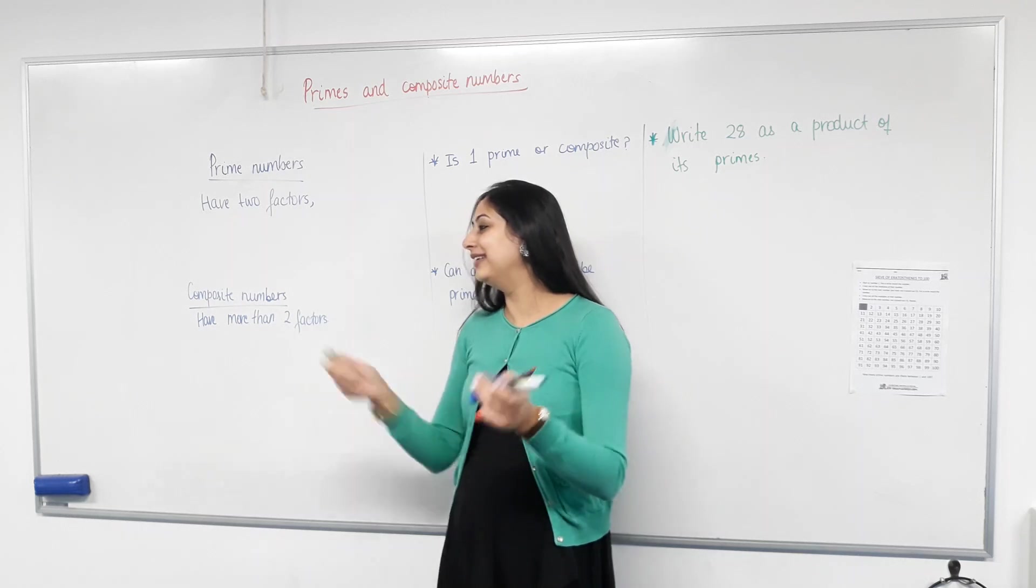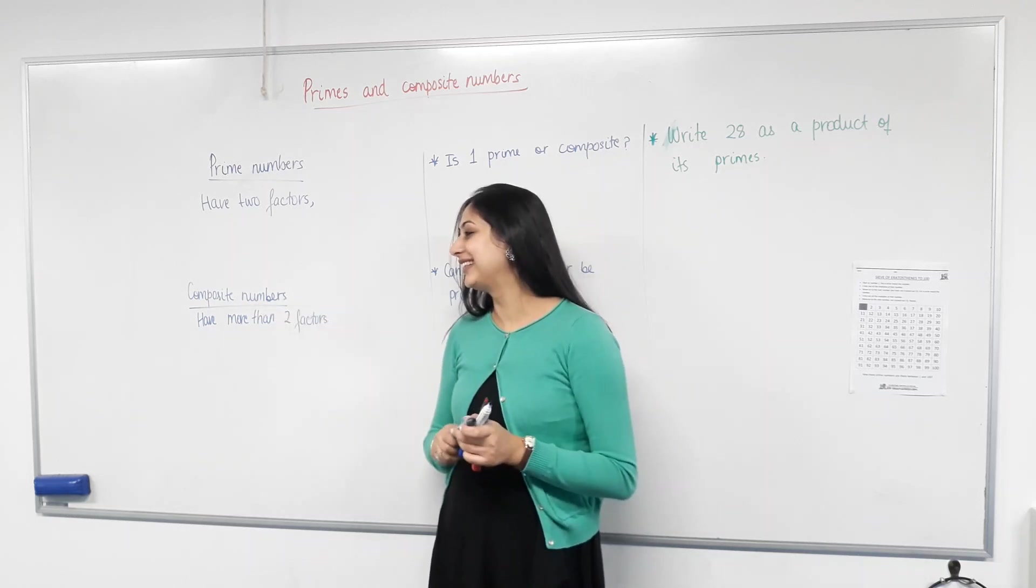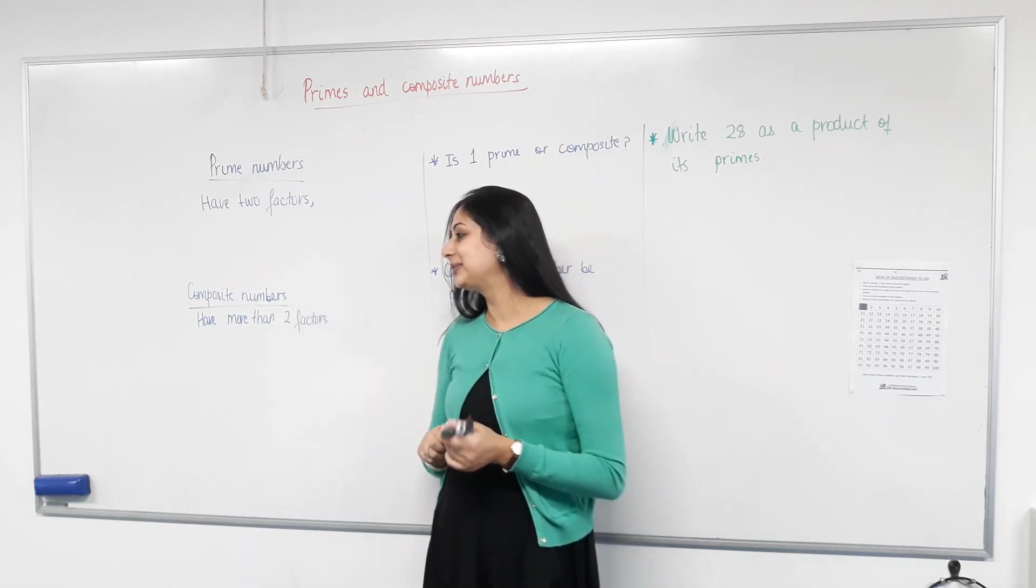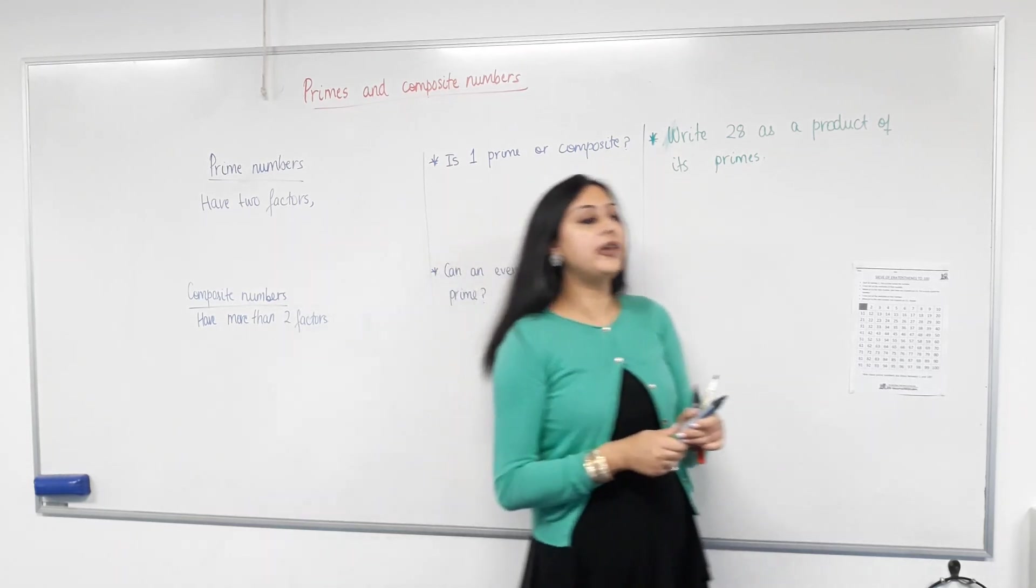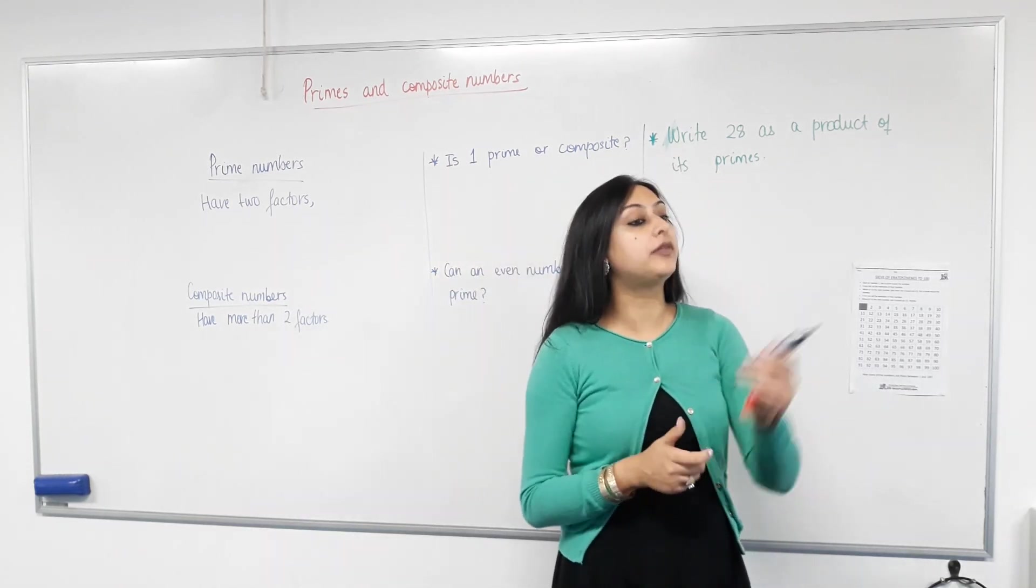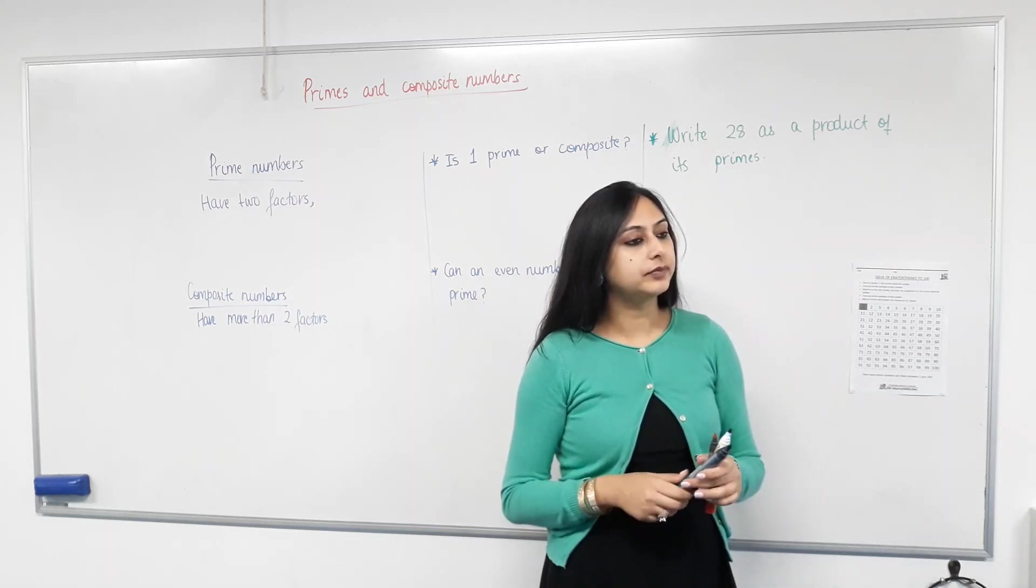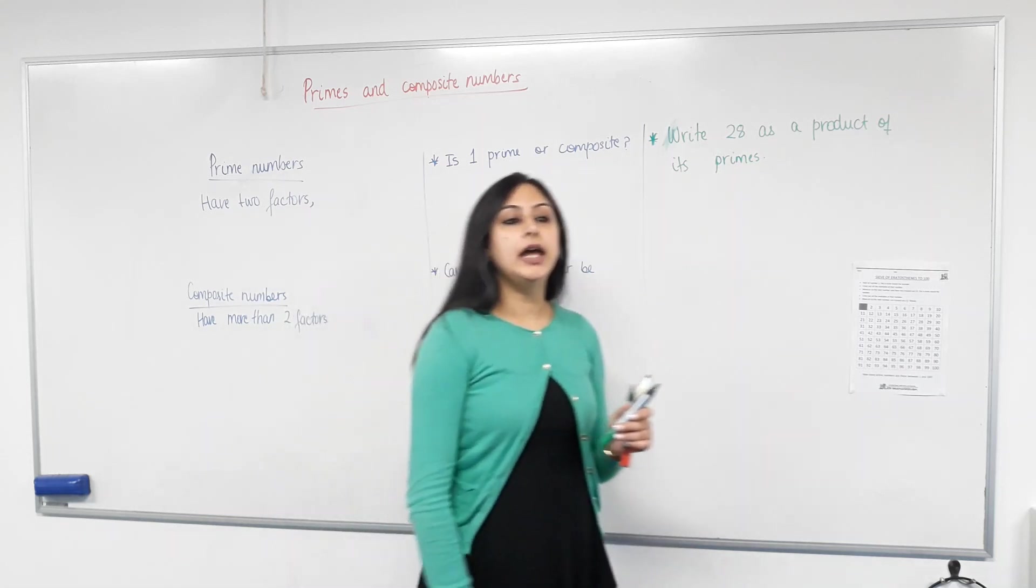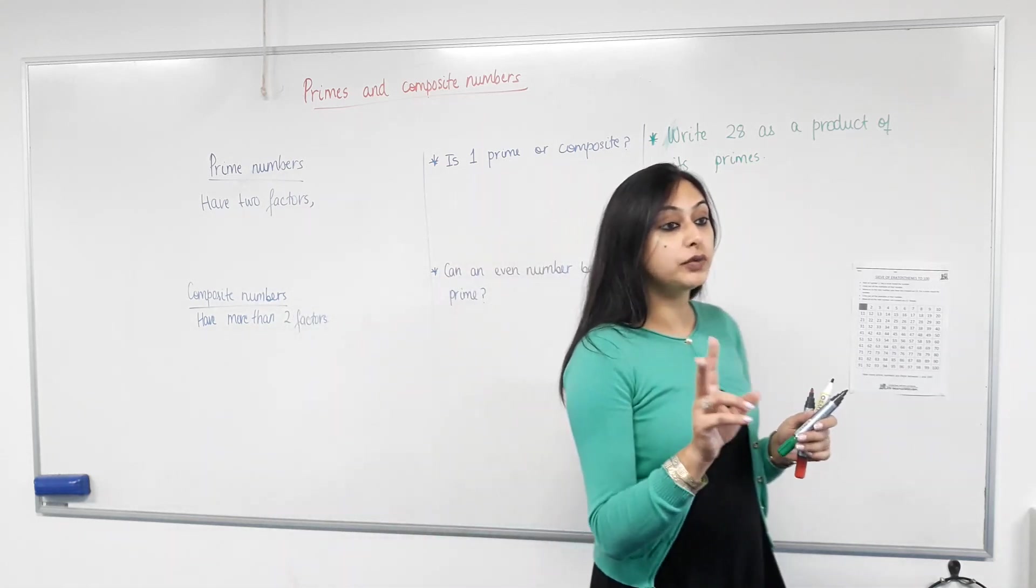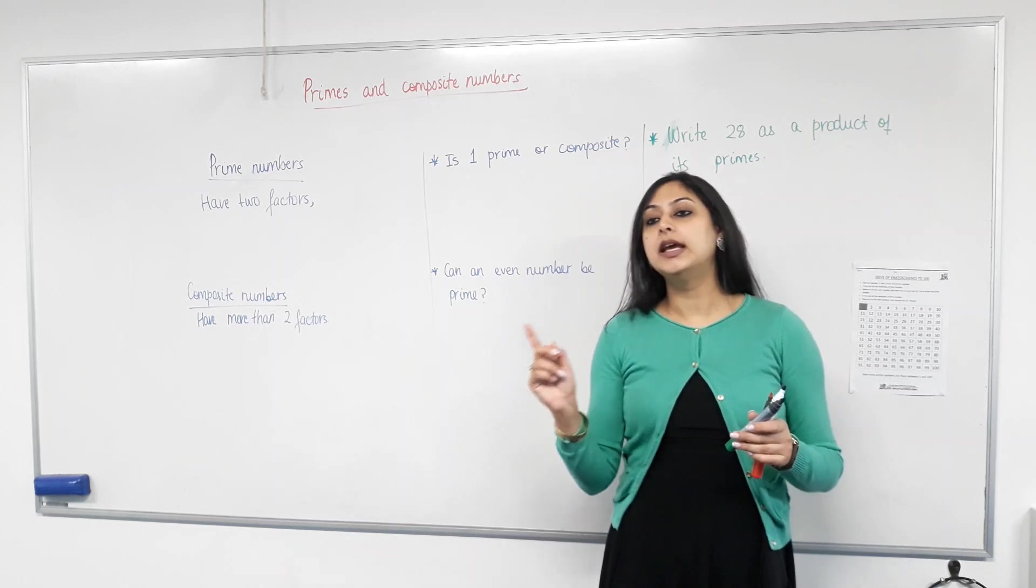Numbers that can only be divided by one and itself. That's really good. I'm very happy with that. Anyone else who has a similar definition? It's a number that only has two factors. Well done. That is exactly how I define a prime number. A number that has exactly two factors. One and itself.